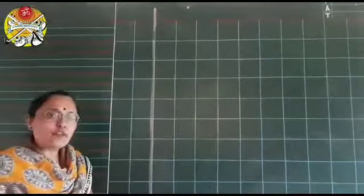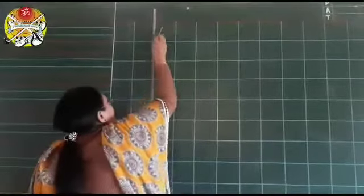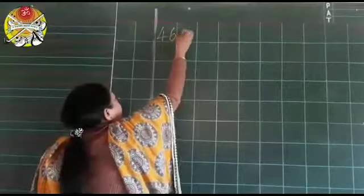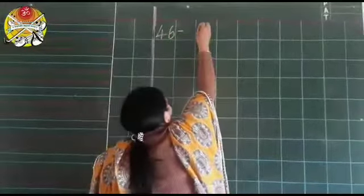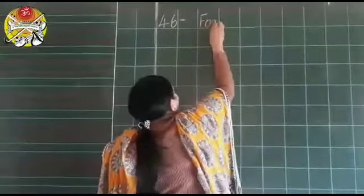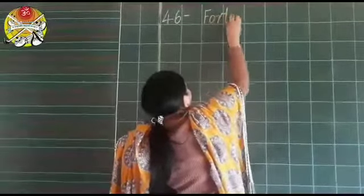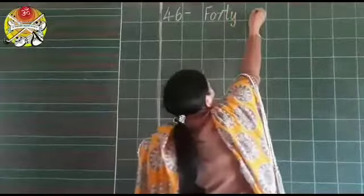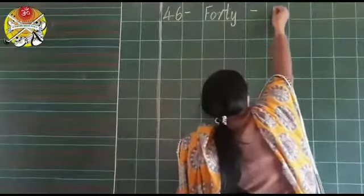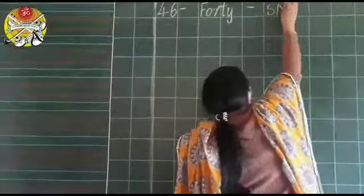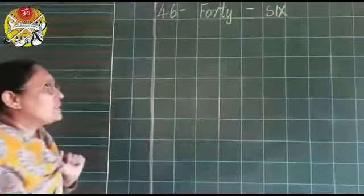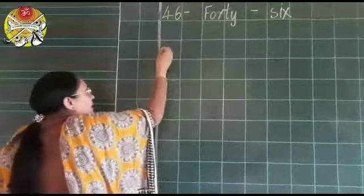Now, after 45, 46 dash F-O-R-T-Y, 40. New box, we will put the dash and write the spelling S-I-X, 6. 46. Leave one square and write.